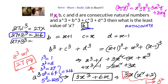Now suppose b, c, d are consecutive even natural numbers such that a cube equals b cube plus c cube plus d cube. What is the least value of a? You can try that problem — the answer should be 12, i.e., a = 12.